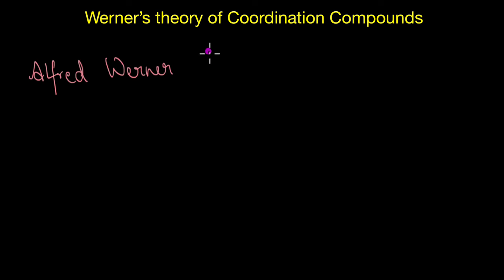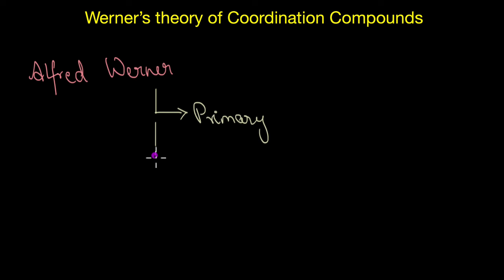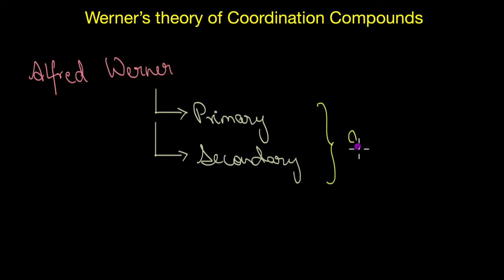It was a scientist named Alfred Werner who first recognized the concept of coordination compounds and tried to explain the bonding in these compounds. He prepared and studied a number of such compounds, compared their physical and chemical properties, and finally proposed the famous Werner's theory of coordination compounds. Based on these experiments, he explained that metals showed two different types of valencies in a coordination compound: primary valencies and secondary valencies.